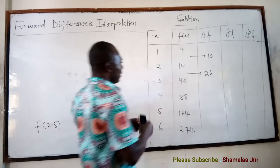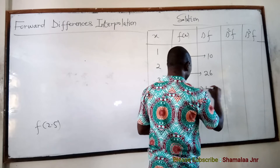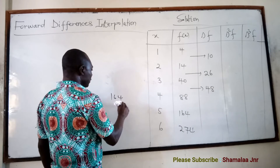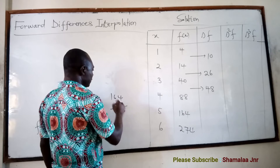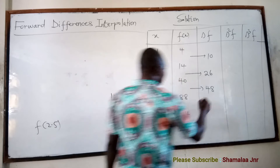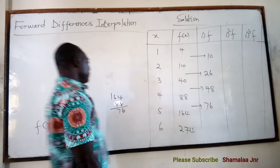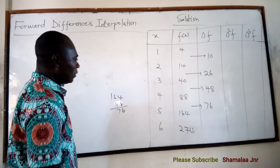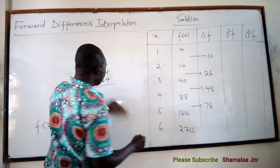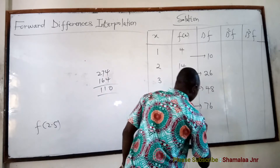Continuing the first forward differences: 164 minus 88 equals 76. And 274 minus 164 equals 110. So the first forward differences are 10, 26, 48, 76, and 110.